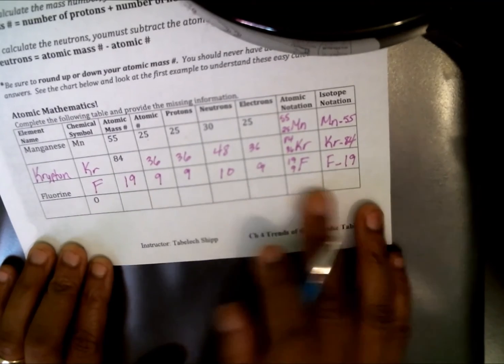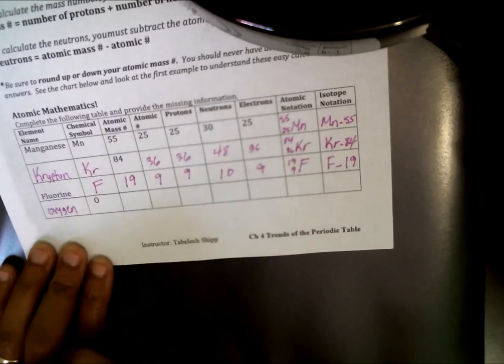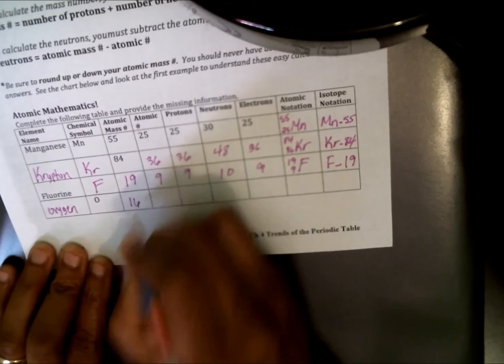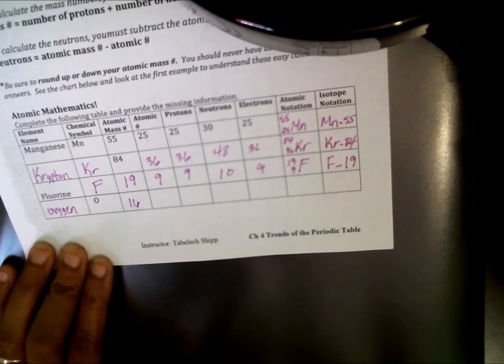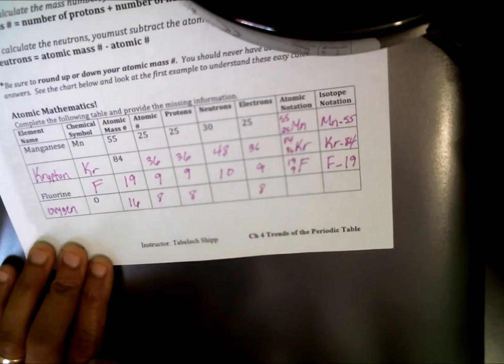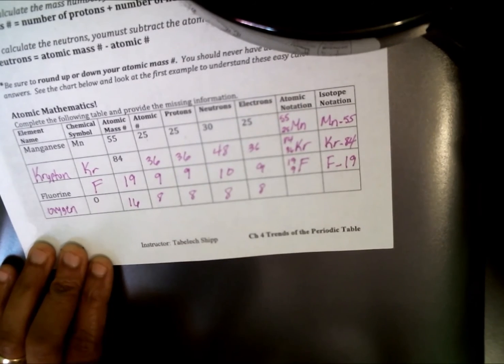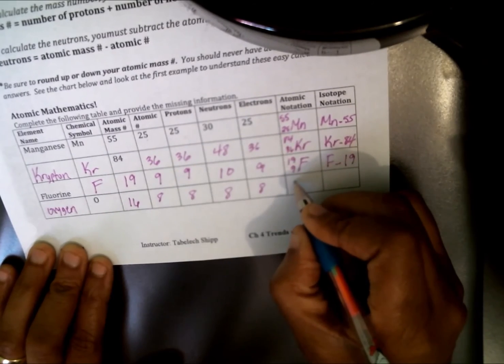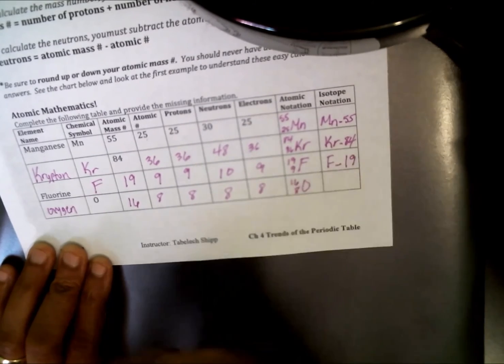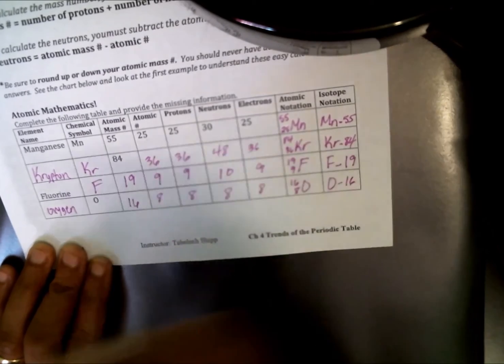That top number that I saw previously of 9 is the atomic number. I'm going to write 9 for the atomic number. Protons is 9. Electrons is 9. I will subtract these two numbers here, 19 minus 9, to give me 10. For my atomic notation, 19 over 9, F. And for my isotope notation, F dash 19. The last one is just as easy as the first one. We know that's the number for oxygen. The atomic mass number for oxygen is 16 according to my periodic table. The atomic number is 8. Protons is 8. And so are my electrons. When I subtract 16 from 8, I also get 8 for my neutrons. The atomic notation is 16, 8, O for oxygen. And the isotope notation is O dash 16.